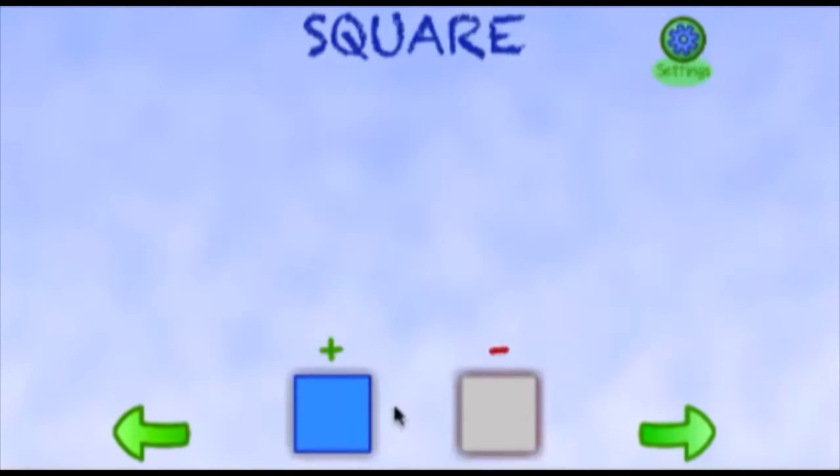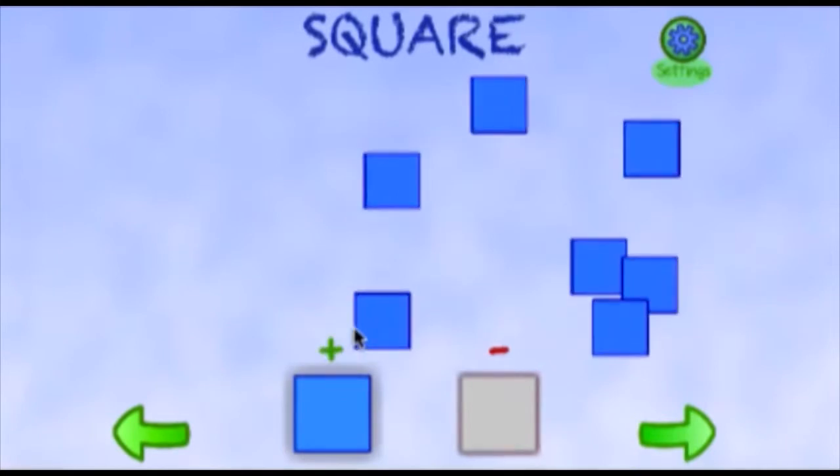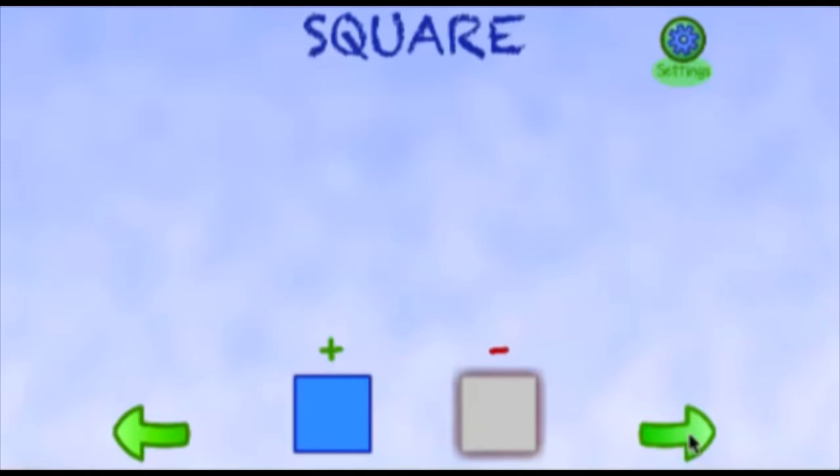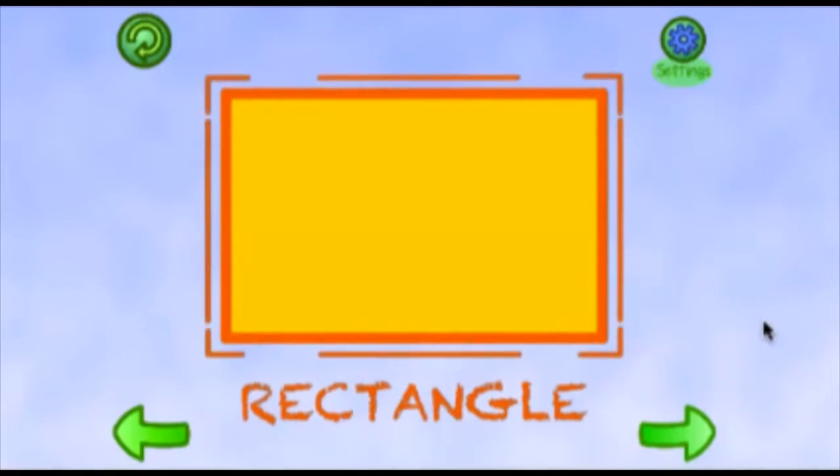This is a rectangle. It has four sides and four corners. Rectangles have two sides of equal length opposite each other and another two sides of equal length.